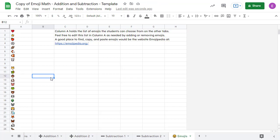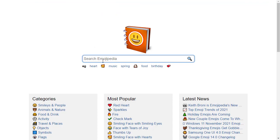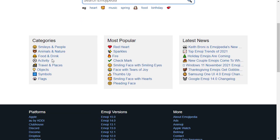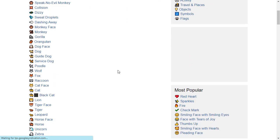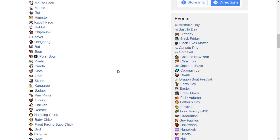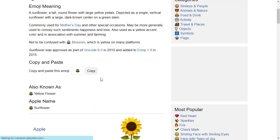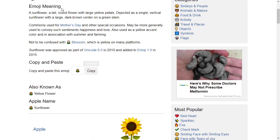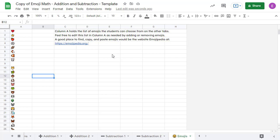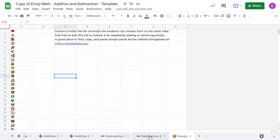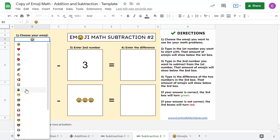You can get emojis from many sources, but one of my favorites is Emojipedia. When you go to Emojipedia, you can search for or browse any of the categories to find an emoji that you'd like. Once you've found one, simply copy the emoji, go back over to the Emojis tab in our spreadsheet, and paste it in. That emoji will now be available for the student to choose when they are doing their problems.